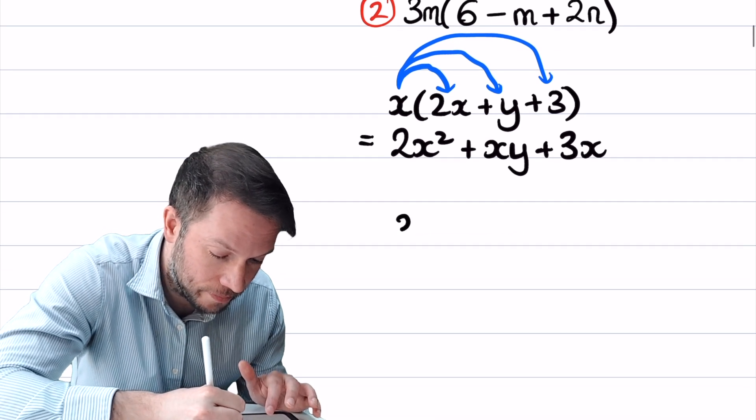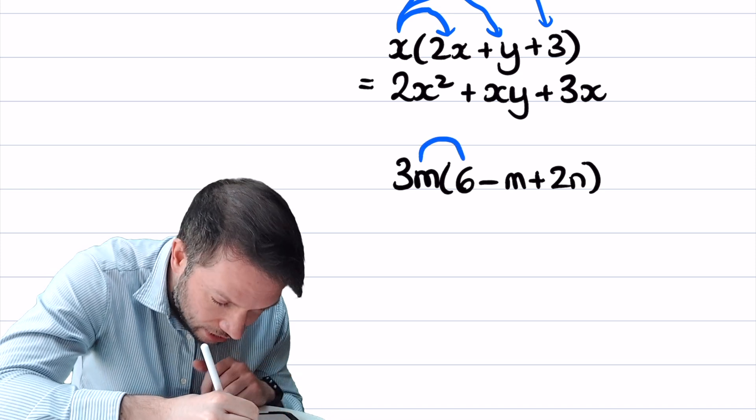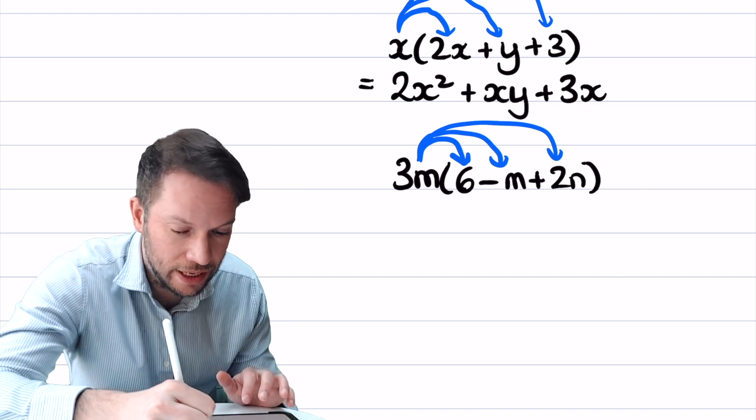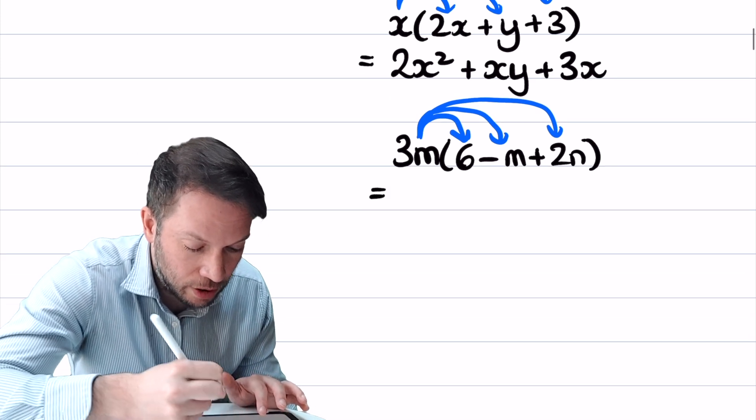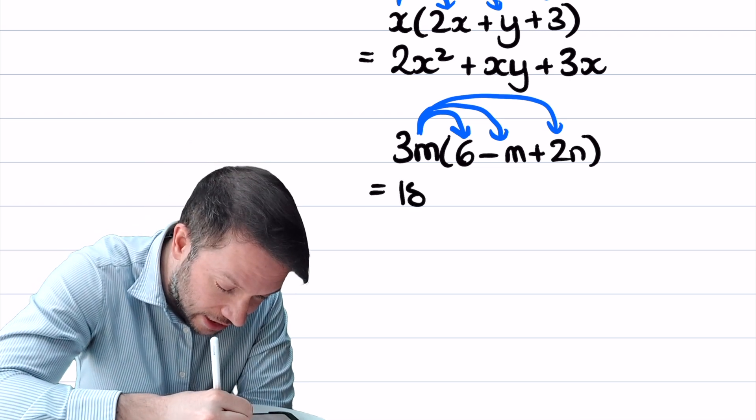What about the second one? We do the term in front of the bracket times by each thing inside, so the 3m times the 6, the 3m times the minus m, and the 3m times the 2n. Now the 3m multiplied by 6, well 3 times 6 is 18, so it's 18m.